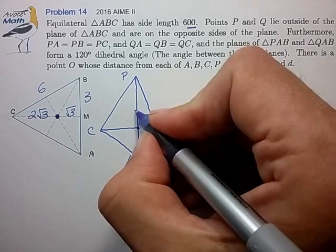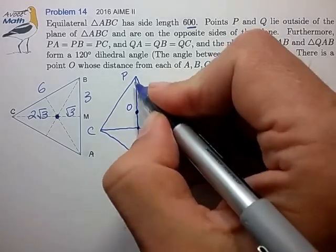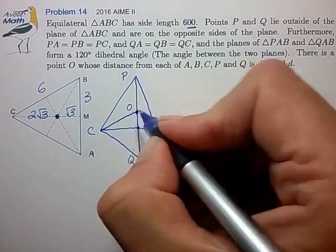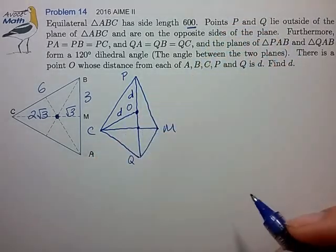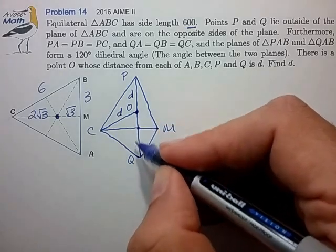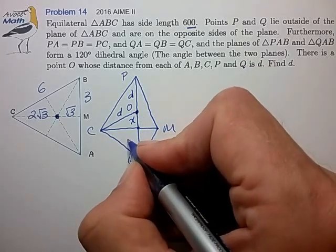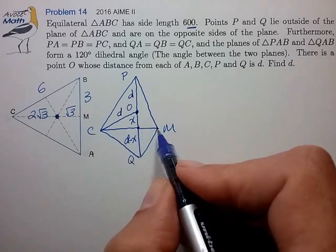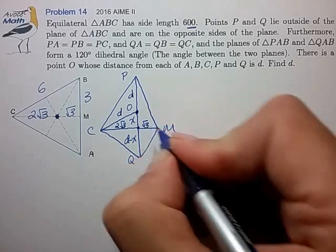And it looks like we have a point O that's going to be equidistant from P, C, and Q. Let's draw those line segments in and identify the distance d. Now O to Q is also the distance d and it looks like it's broken up into two parts here. So let's just write that out. There's part x and d minus x, and the base CM we know from before. That's 2√3 and √3.